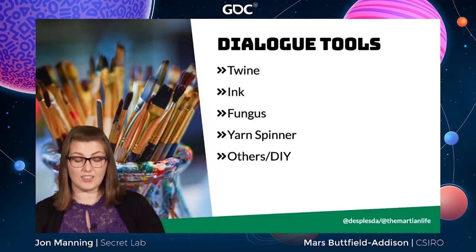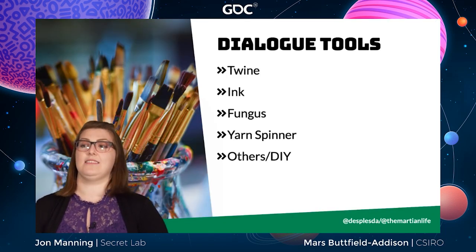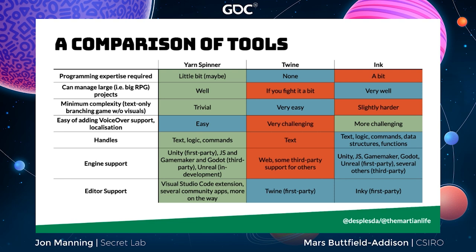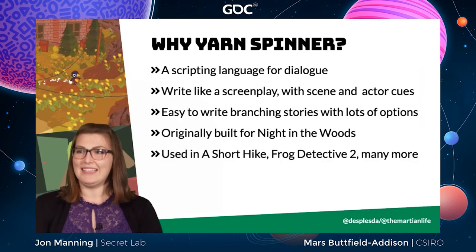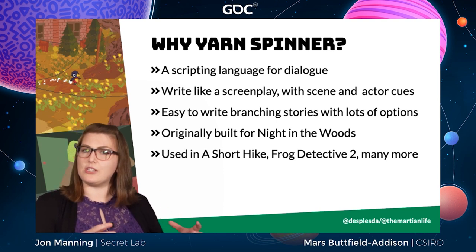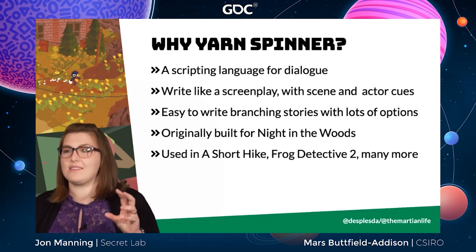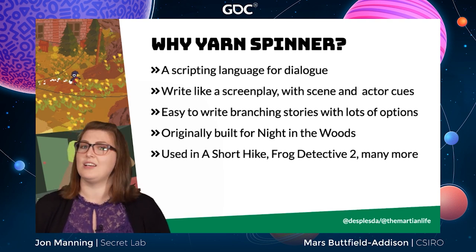The three best-known tools right now are Twine, Ink, and Yarnspinner. Yarnspinner exists halfway between Twine's complexity and Ink's complexity. Twine is fantastic for working with lots of text. Ink is fantastic when you need lots of logic controlling individual lines. Yarnspinner gives you the best of both worlds — it's really easy to get started with something small, but there's also a lot of room to grow.